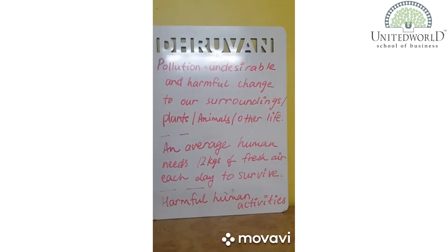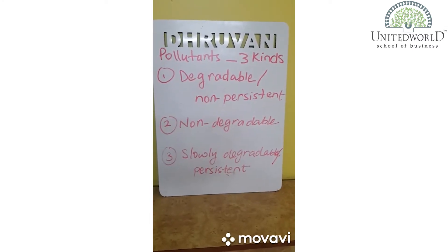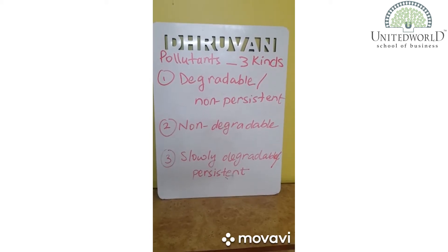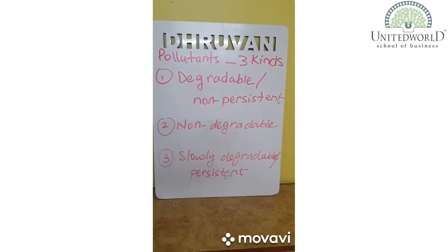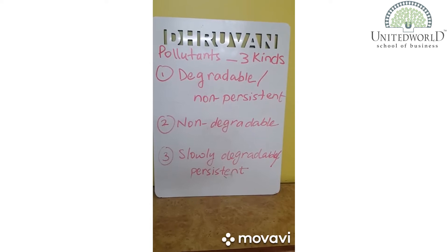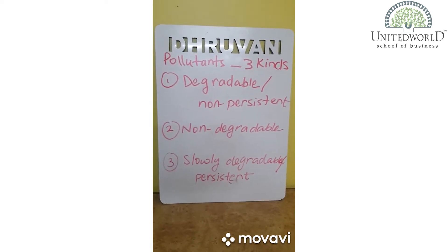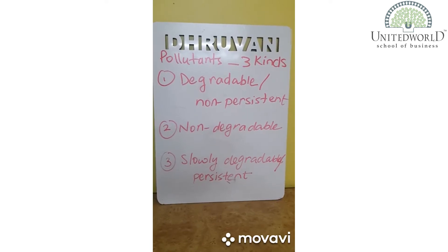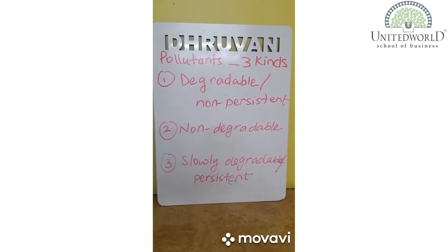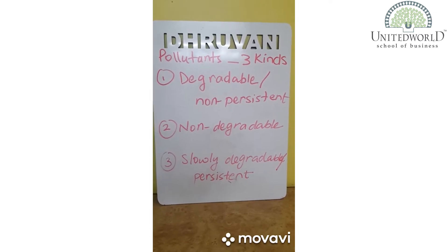What are pollutants? Pollutants are the substances which cause pollution — they are the reason for pollution around us. There can be noise pollution, water pollution, air pollution, and so on.